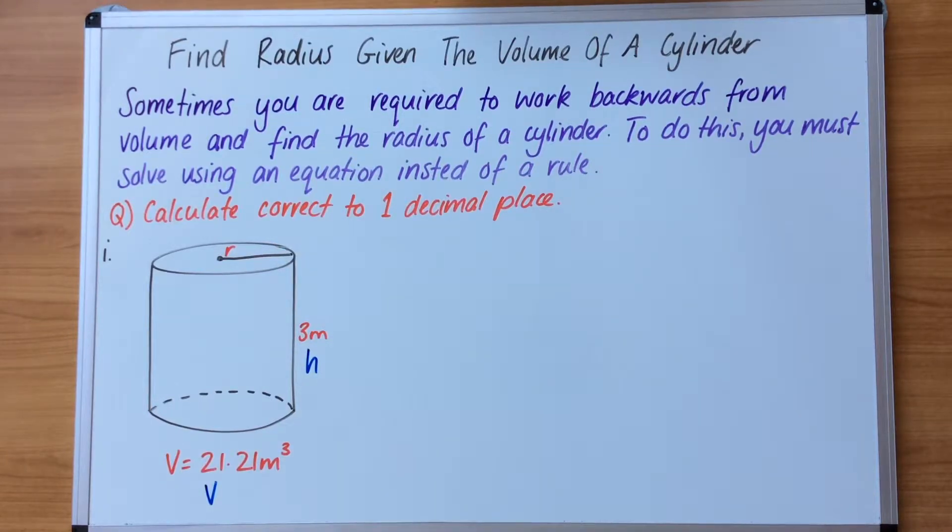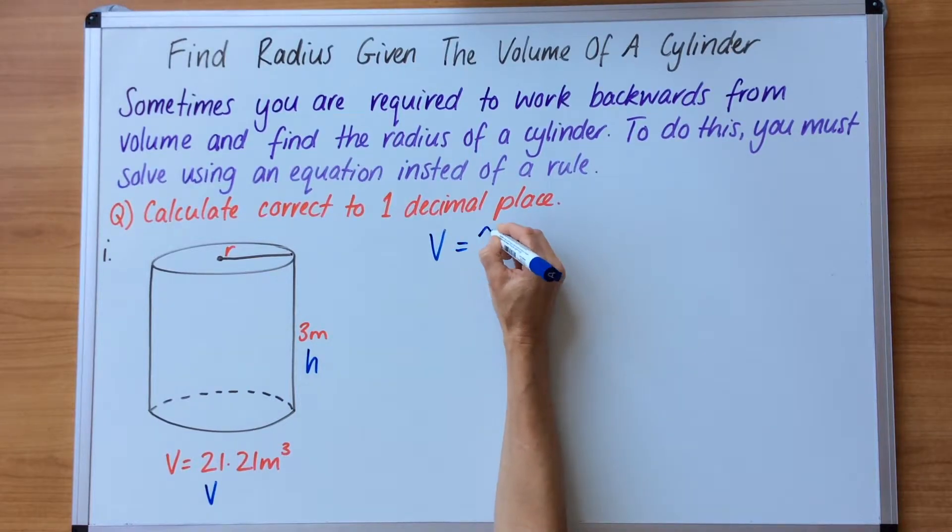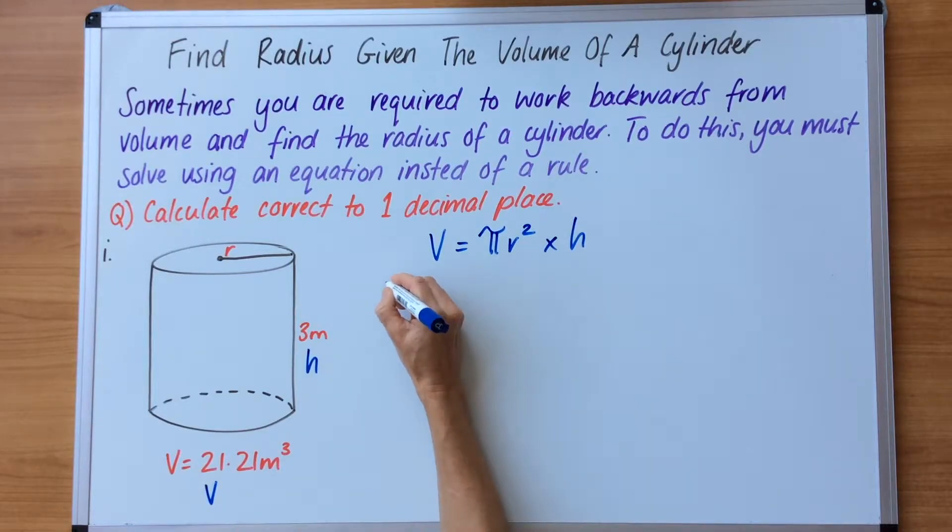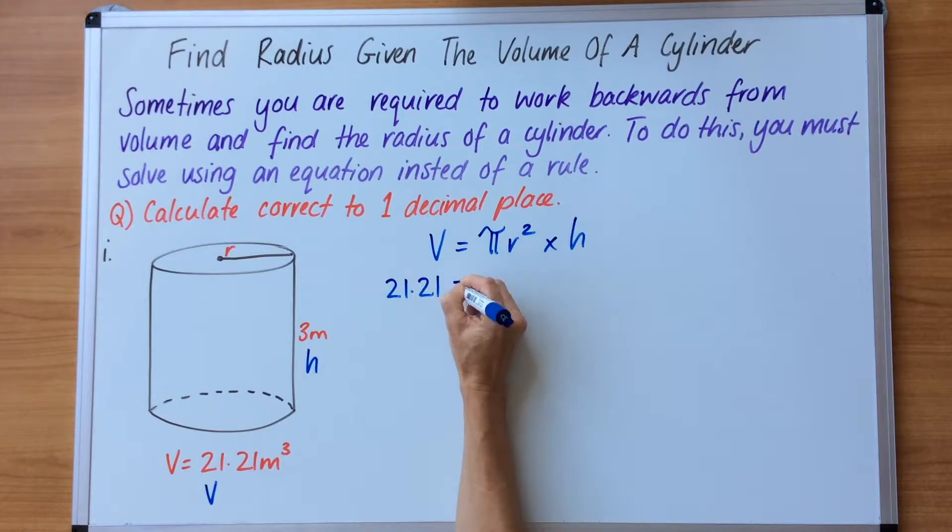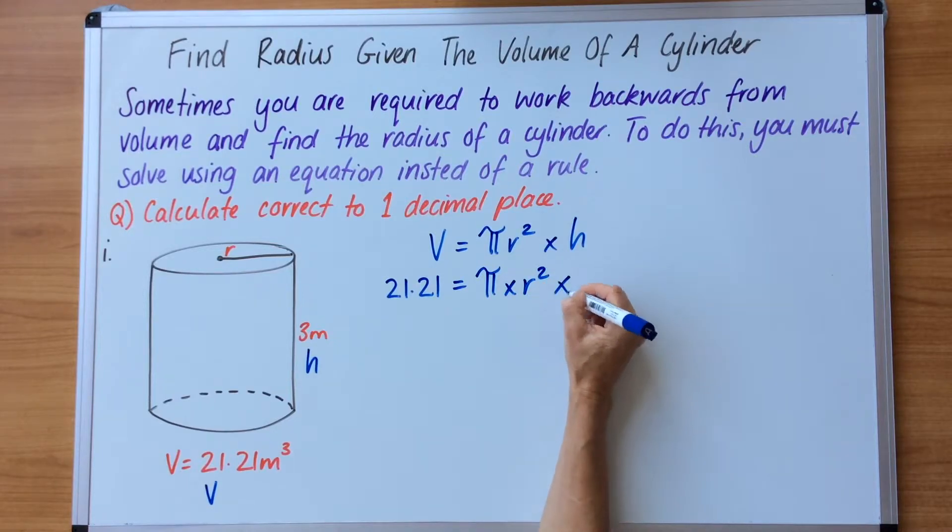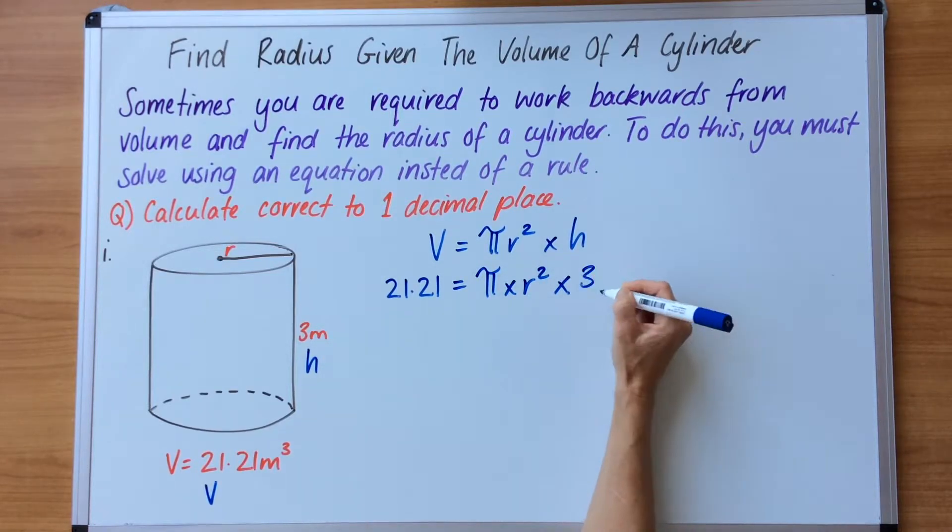So first of all we are going to write the volume rule. Volume equals pi r squared times height. And then we are going to substitute in the values that we know. So we know that the volume is 21.21 equals pi times r squared, we don't know that yet, times the height of 3.